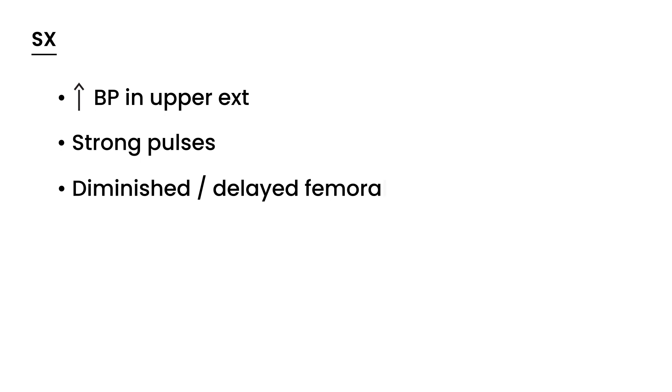So what are the symptoms? As we described earlier, you'll have increased blood pressure in the upper extremities, and you'll also have strong pulses in the upper extremities. And in contrast, you'll have diminished or delayed pulses in the femoral area, and of course you'll have low blood pressure in the lower extremities.